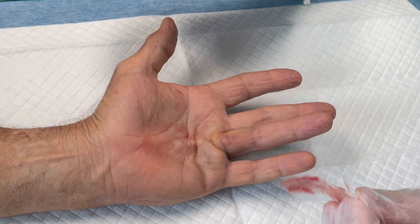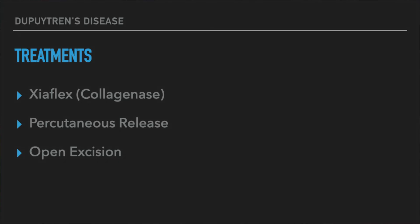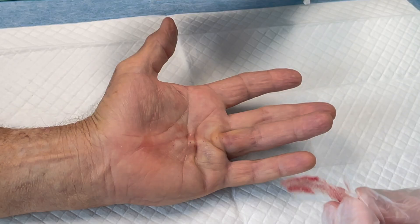Dupuytren's disease can be treated in three different ways if it meets the criteria for a procedure. One is a Xiaflex injection, number two is a percutaneous release, and number three is an open excision of the Dupuytren's cord.